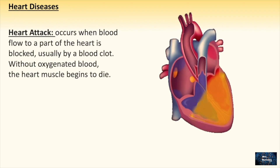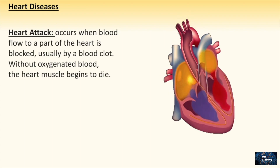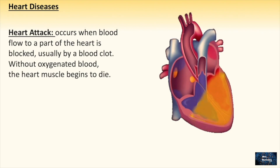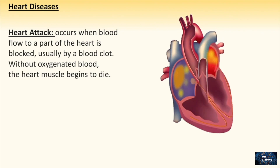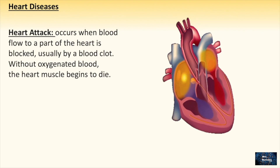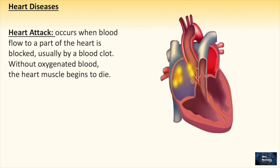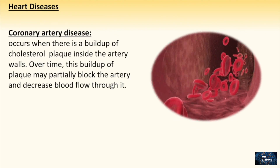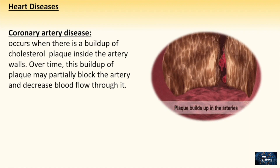Starting with heart diseases: a heart attack occurs when the blood flow to a part of the heart is blocked, usually by a blood clot. Without oxygenated blood, the heart muscle begins to die.